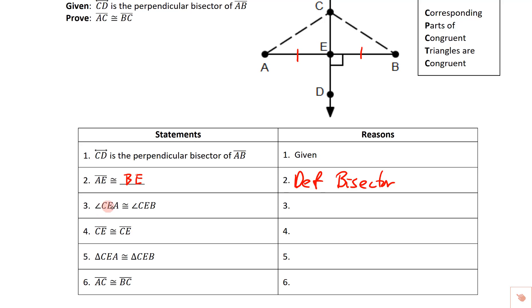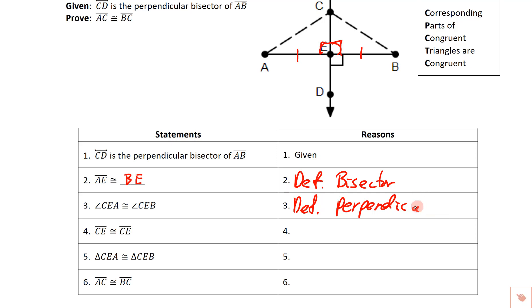The next statement: angle CEA is congruent to angle CEB. Those angles are congruent because they're both right angles. The reason we write is definition of perpendicular. If it's perpendicular, it cuts into two right angles, and those two right angles are congruent. So we have a 90-degree angle on one side and a 90-degree angle on the other side.